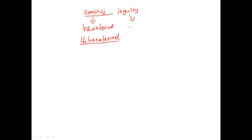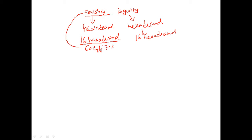Similarly, 'is guilty' is also converted to hexadecimal and its size will be 16 characters — something like 6, A, E, F, F, 7, 3, and so on. Each hexadecimal value is then represented as a 4-bit binary pattern. So if the value is 6, it will be 0110 in binary. When you have 16 hexadecimal values, you get 64 bits of binary output.